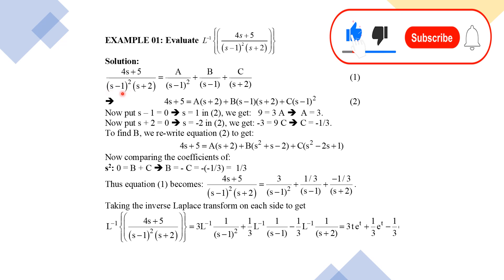Since (s − 1) is a repeated factor, we adopt the form: A / (s − 1)² + B / (s − 1) + C / (s + 2). Multiply both sides by (s − 1)² (s + 2). The denominator terms cancel, leaving 4s + 5 on the left.